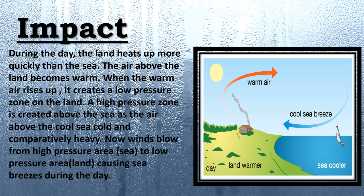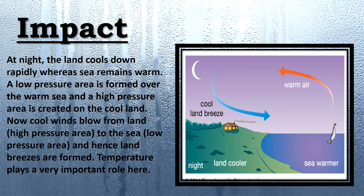Now let's see how land breezes are formed. At night, land cools down rapidly whereas the sea remains warm. So a low pressure area is created above the sea and a high pressure area is created on the land, because the land is comparatively cooler than the sea. Cool winds blow from land to sea, and hence land breezes are formed. In both the breezes — land breeze and sea breeze — weather and climate play a very important role.